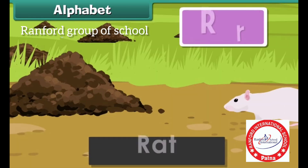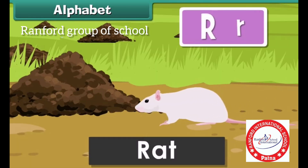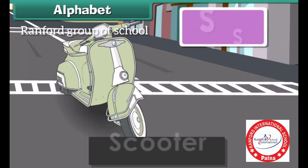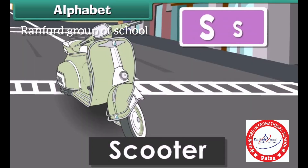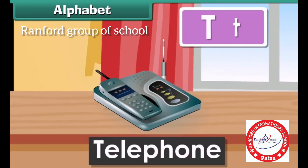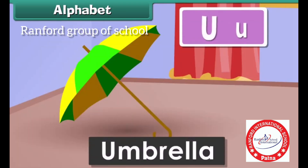R for Rat. S for Scooter. T for Telephone. U for Umbrella.